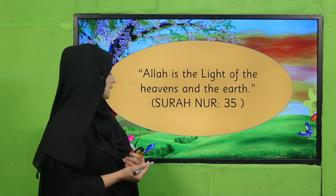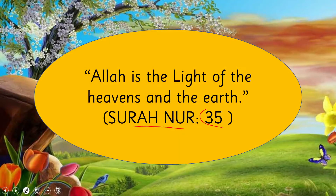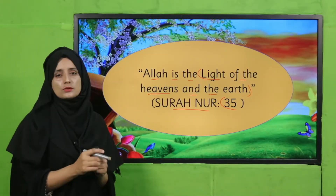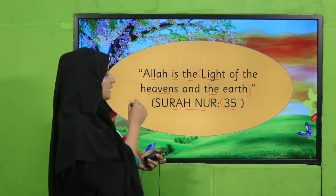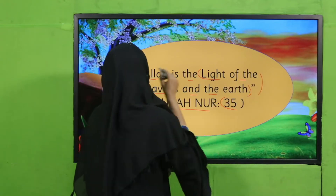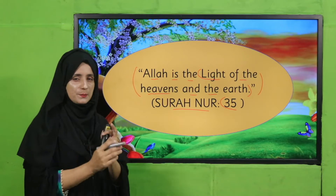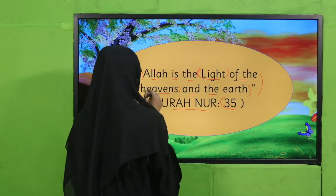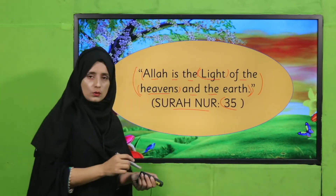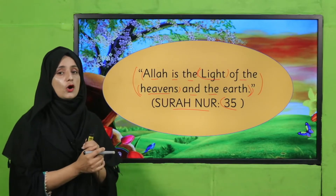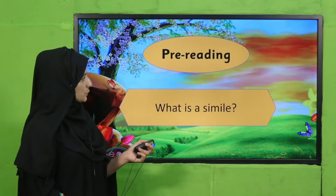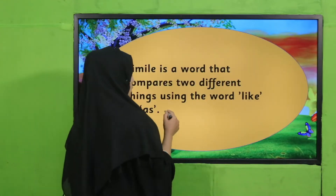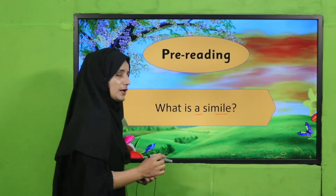My dear teachers, Allah Subhanahu wa Ta'ala mentions in the Quran, Surah Nur, verse number 35: 'Allah is the light of the heavens and the earth.' Can you see what this is? Yes, this is a simile — there is a comparison that Allah is the light of the heavens and the earth.